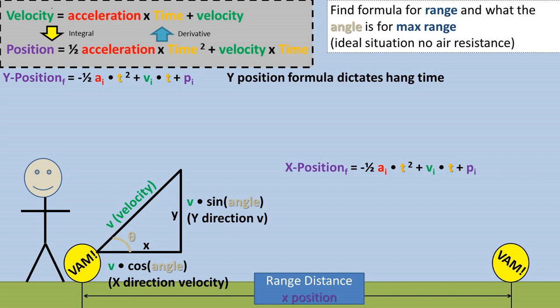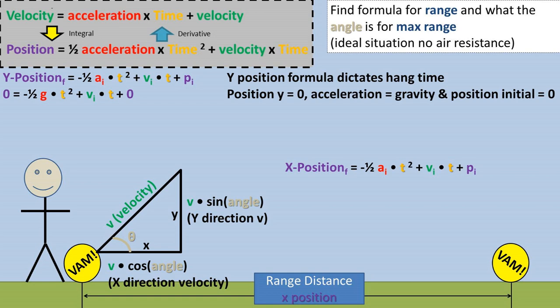So we must rearrange the y position formula to get time to one side. We can plug in the y position of zero because it is zero when it is at ground level at the finish point, and an acceleration due to gravity of g, and the position initial of zero because it is also on the ground at initial condition. Then we can plug in the velocity initial in the y direction, which is the velocity times the sine of the angle.